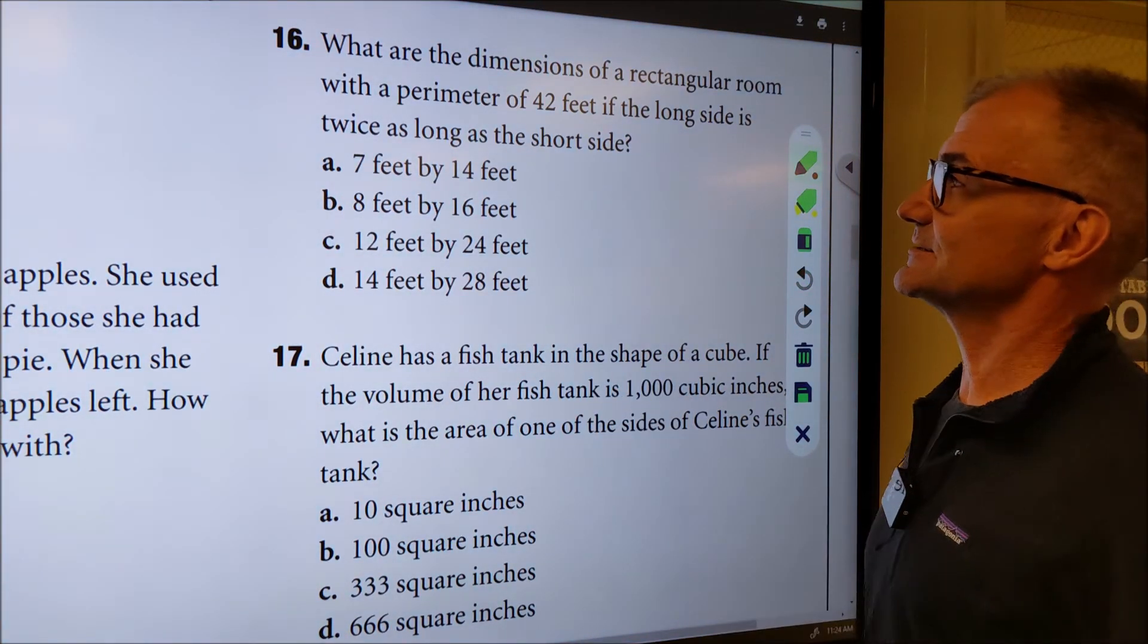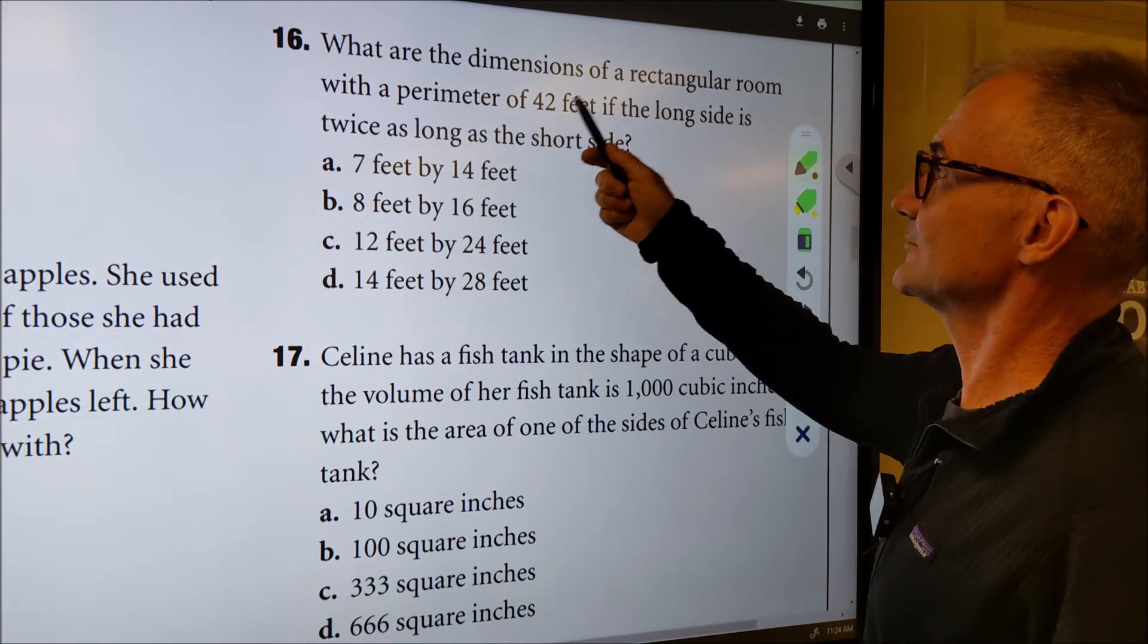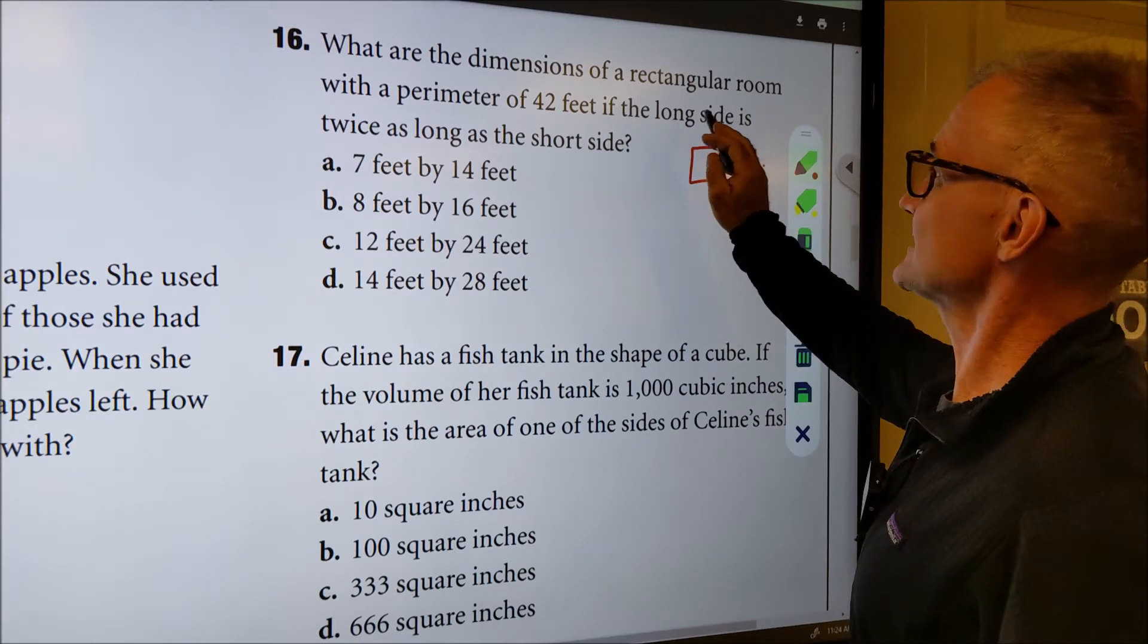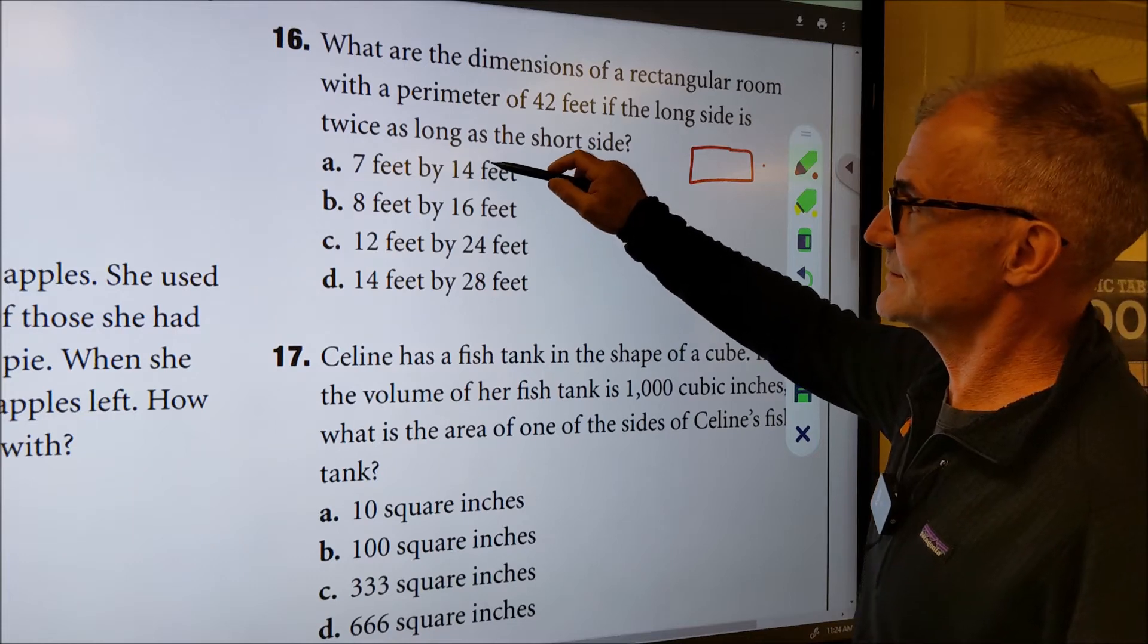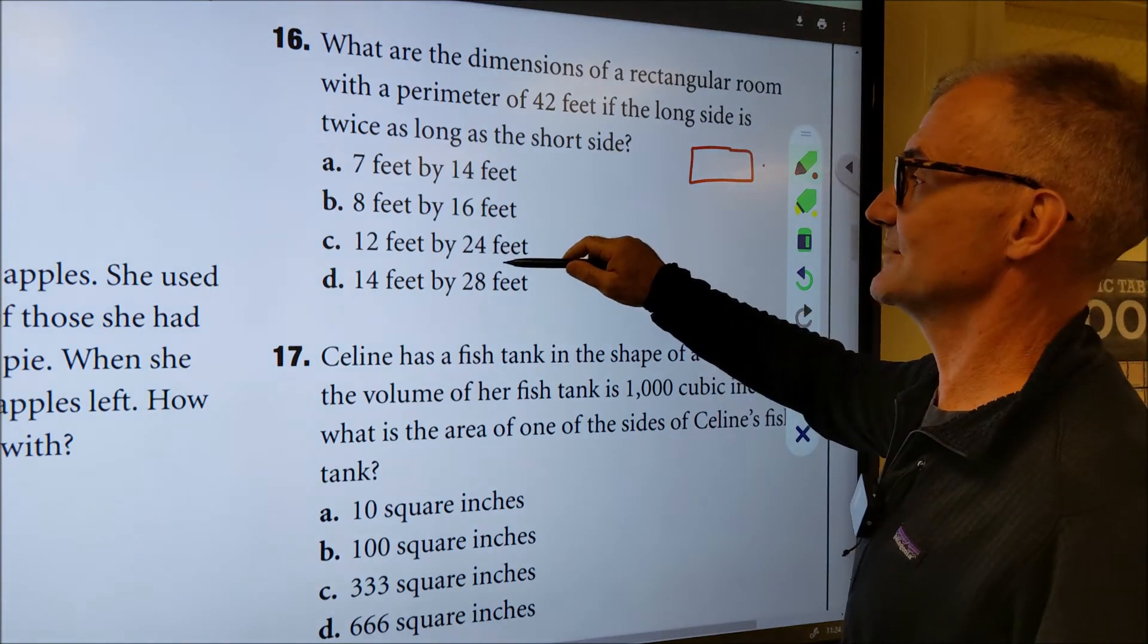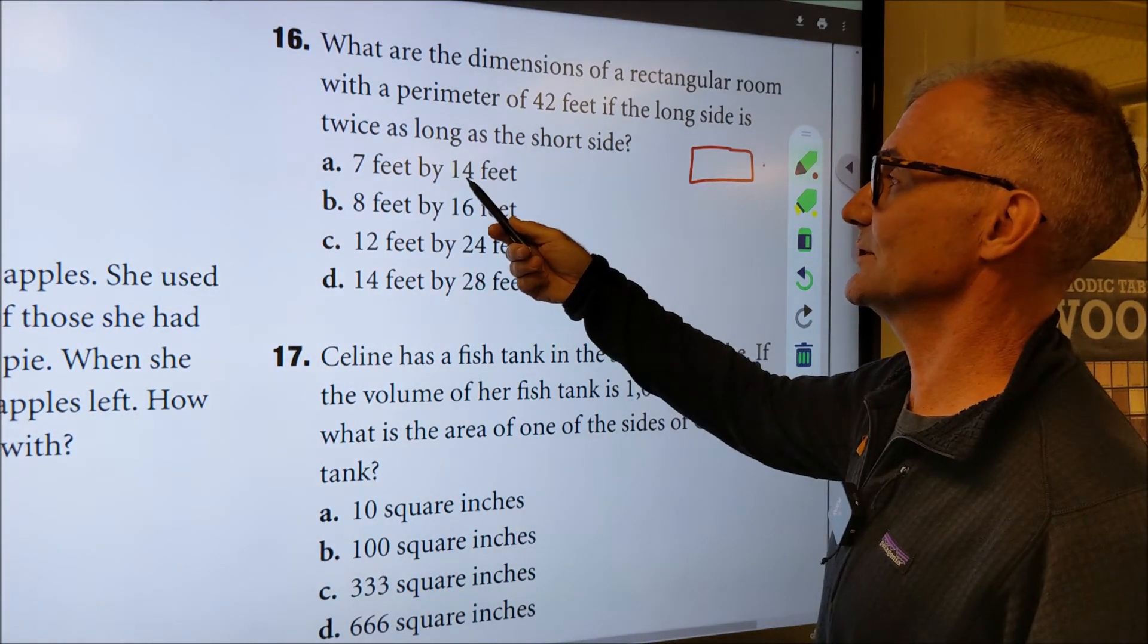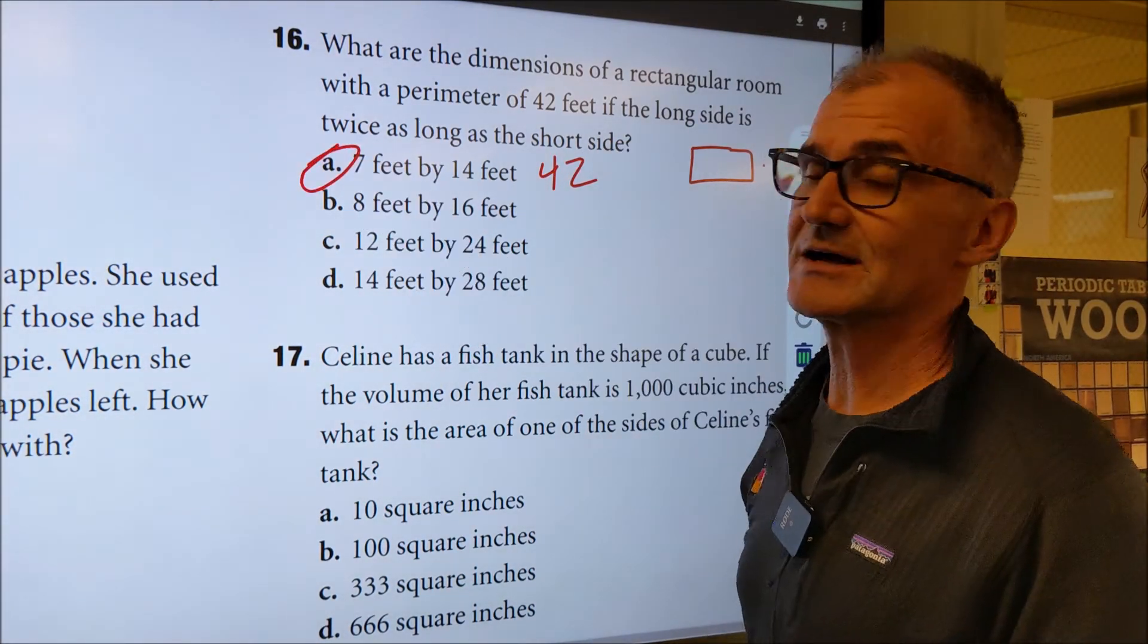Problem number 16, also chapter seven area, perimeter, volume. What are the dimensions of a rectangular room with a perimeter of 42? So if it's a rectangular, that means that and that are the same. Twice. The long side is twice as long as the short side. So let me just glance through these answers. Every one of these is twice as long as the short side. So I can't cross any out. Let me just go through these really quick. The perimeter is 42. So I'm just going to take this times two and that times two, or I could just add those together. 21 times two is 42. There's my answer right there through a process of elimination.